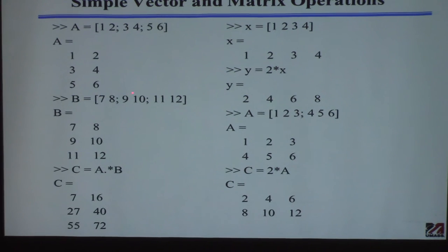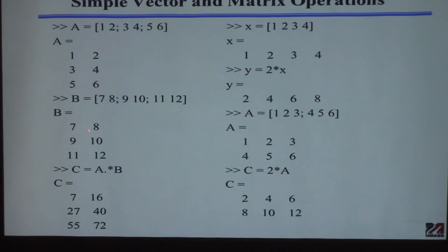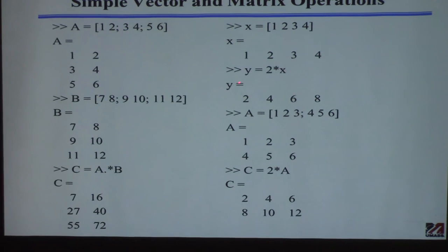You can also do element-by-element multiplication, which is very different from matrix multiplication. Using A dot-asterisk B (A.*B) means multiply the (1,1) element of A by the (1,1) element of B, and so on — not regular matrix multiplication, so A and B must have the same dimension. You can also multiply a vector or matrix by a scalar, for example 2*A, to scale every element.